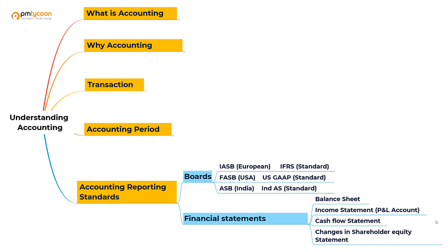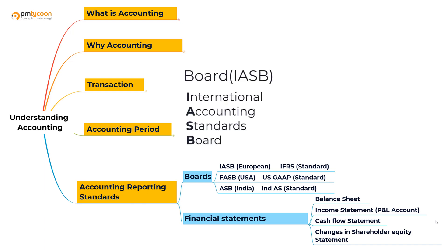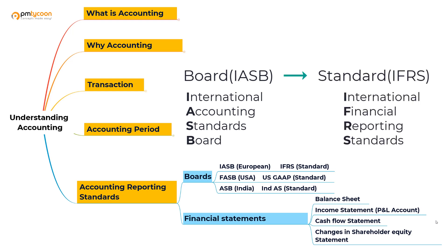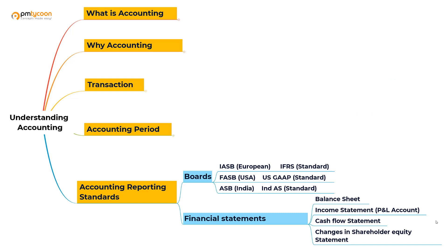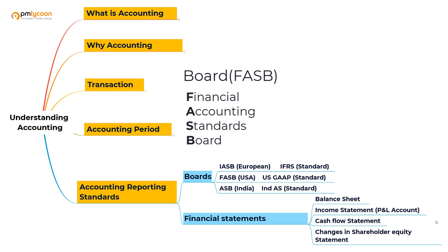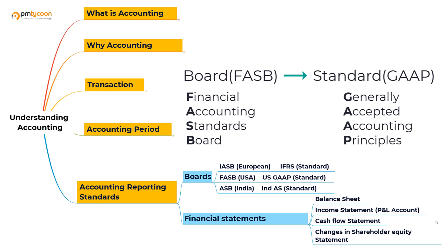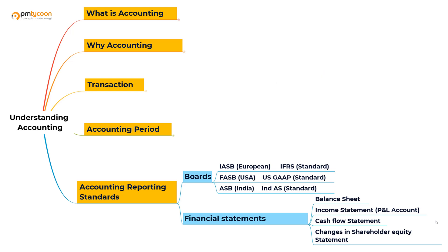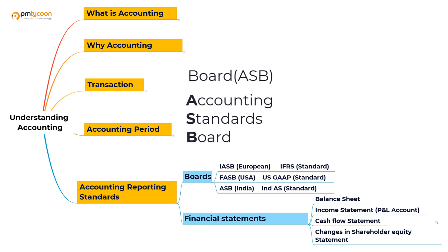The European board is IASB — International Accounting Standards Board — and the standard they follow is IFRS, which stands for International Financial Reporting Standards. In the US, the board is FASB, which stands for Financial Accounting Standards Board, and they follow US GAAP — Generally Accepted Accounting Principles. In India, there is ASB, the Accounting Standards Board.